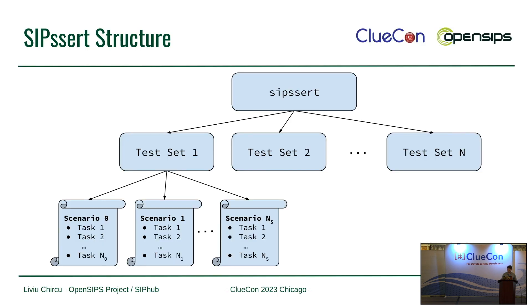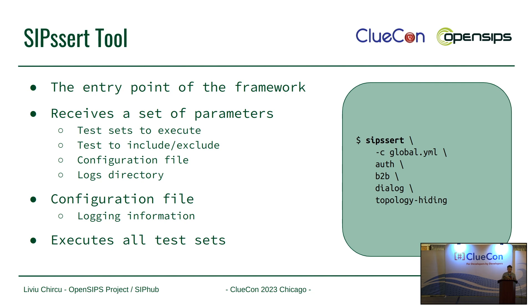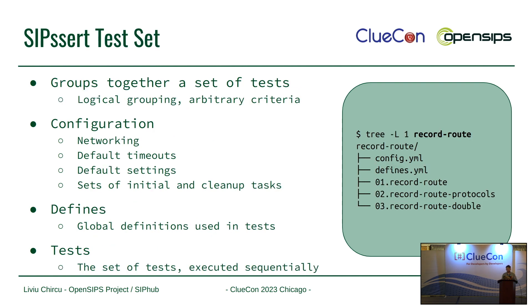A bit about structure: it works with test sets, and each test set is broken down into multiple tests. The main entry point is the SIPssert tool, and you give it the sets to run. Each test set is pretty much a logical grouping - the more your tests have in common, the more it makes sense to group them into a set. For example, if they share the same networking layout, the same SIP timeouts, or the same cleanup sequences, put them into the same set and save up on time, because you only need to set up the network once and then go through all the tests.